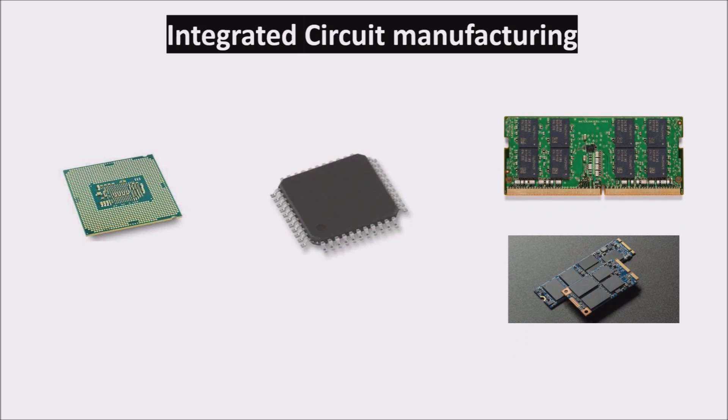It is a multiple step sequence of photolithographic and chemical processing steps during which electronic circuits are gradually created on a wafer made of pure semiconducting material. Silicon is almost always used, but various compound semiconductors are used for specialized applications.